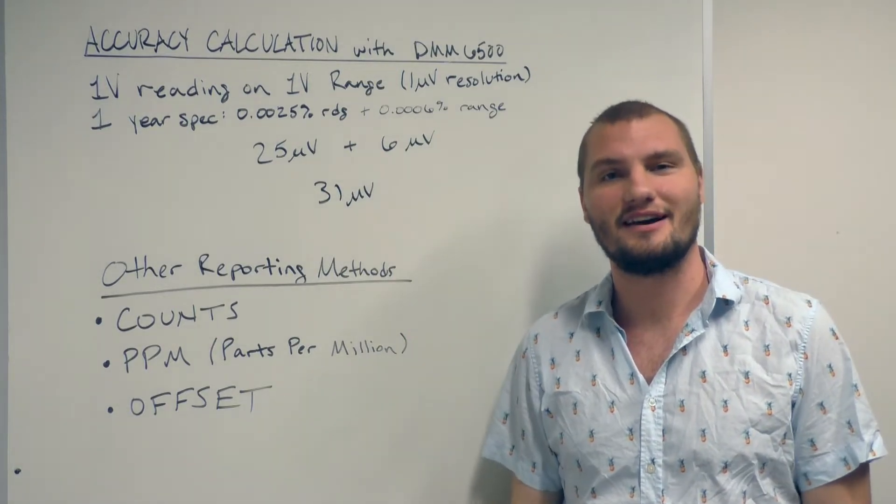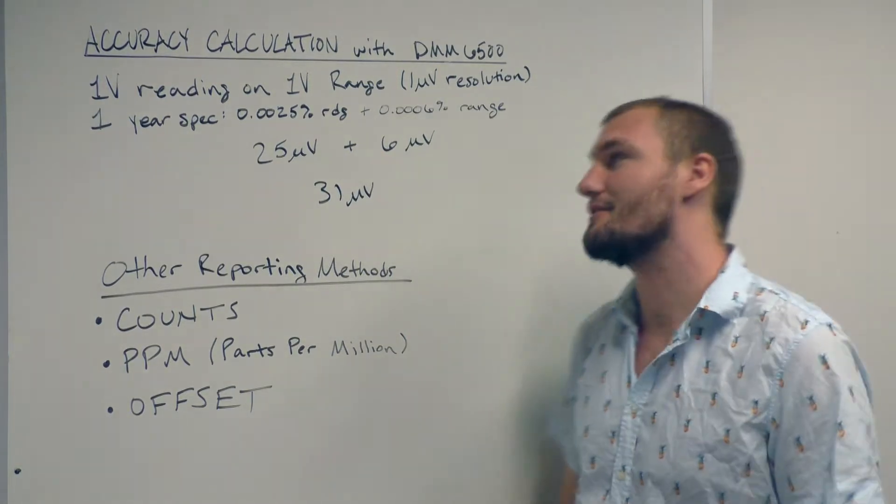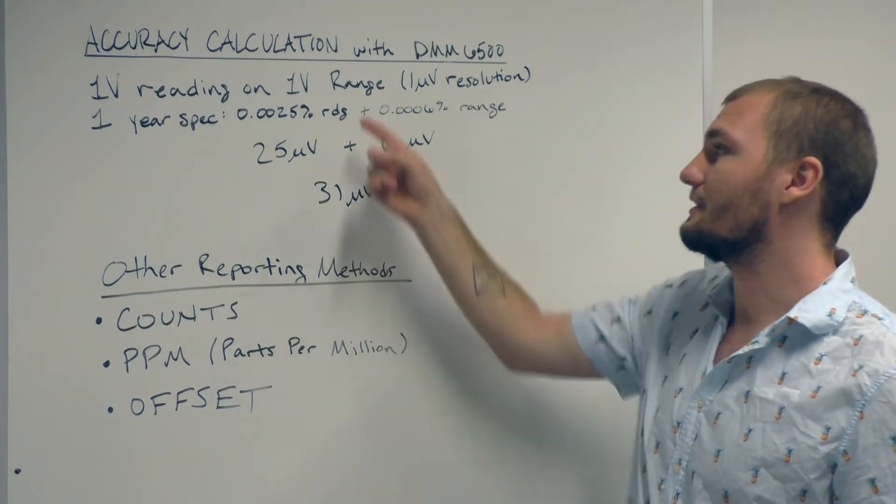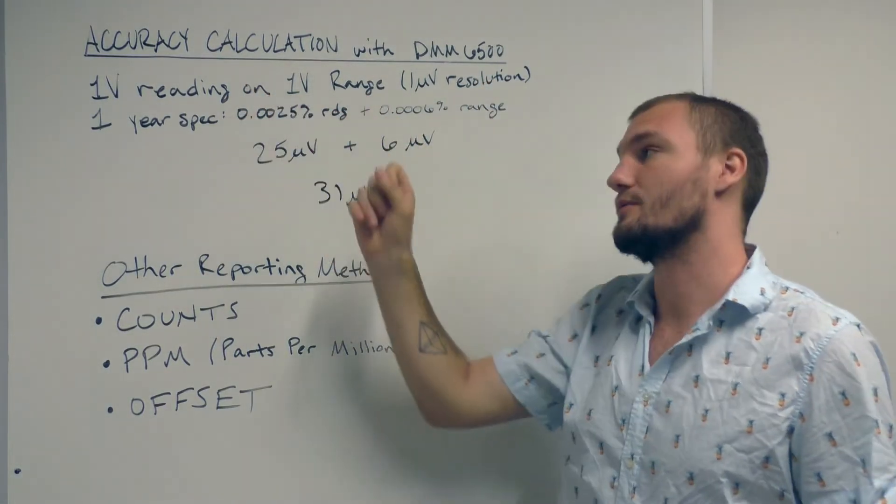Hi, welcome to Keithley Briefly. I'm Steve, and today we're going to talk about accuracy calculation with the DMM6500. As an example, we're going to be on the 1 volt range making a 1 volt reading.